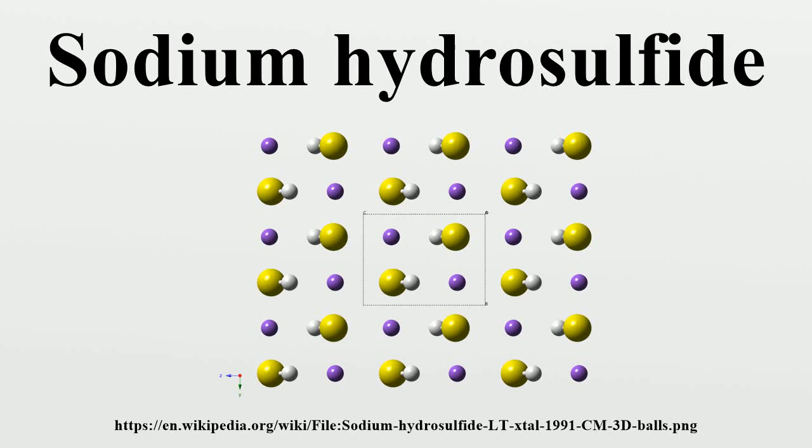Sodium hydrosulfide is the chemical compound with the formula NaHS. This compound is the product of the half-neutralization of hydrogen sulfide with sodium hydroxide.